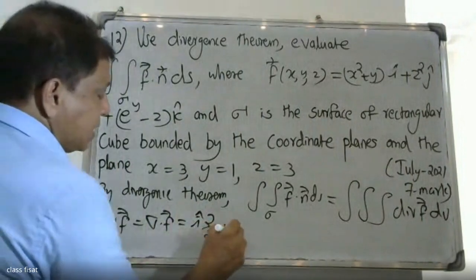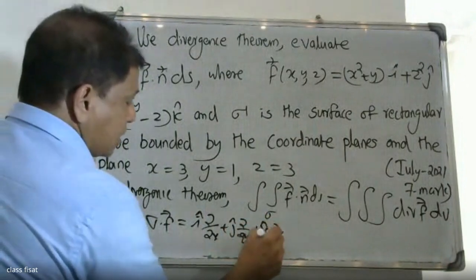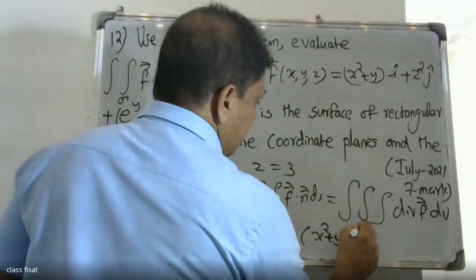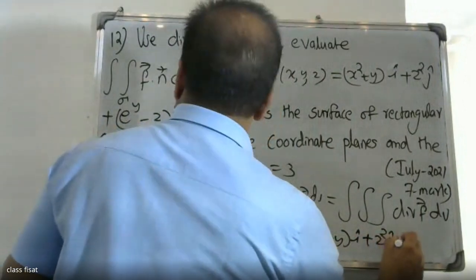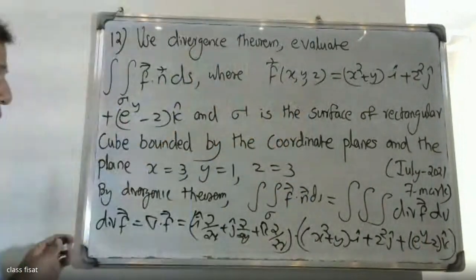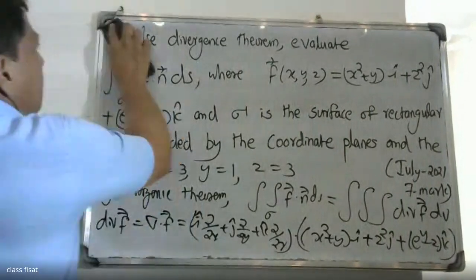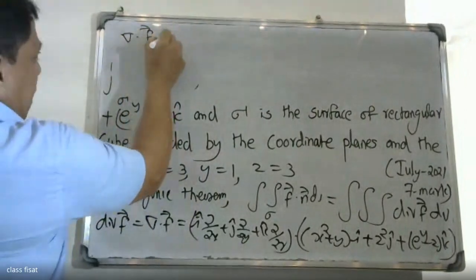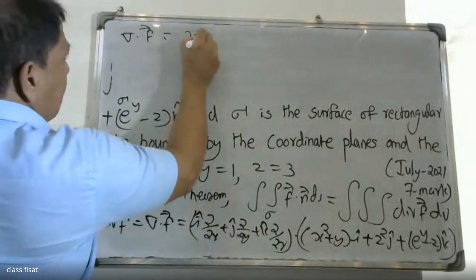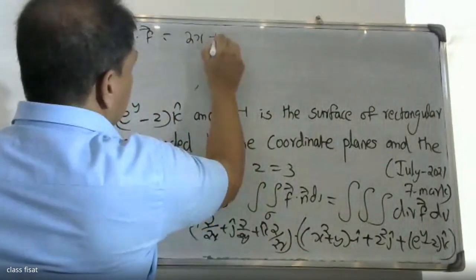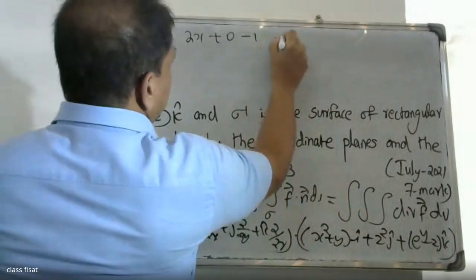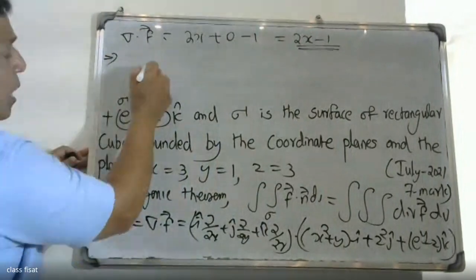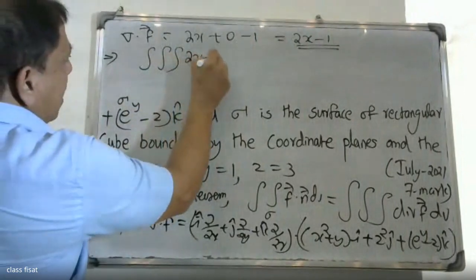Let's compute div F. div F equals i times d/dx plus j times d/dy plus k times d/dz dot F. F equals (x² + y)i plus (y + z²)j plus (e^(y-z))k. So d/dx of (x² + y) equals 2x minus 1. Therefore, we get triple integral of (2x - 1) dV.